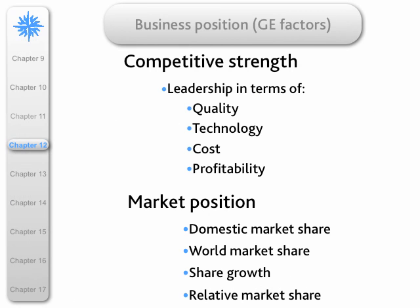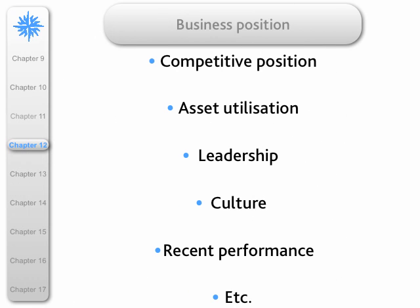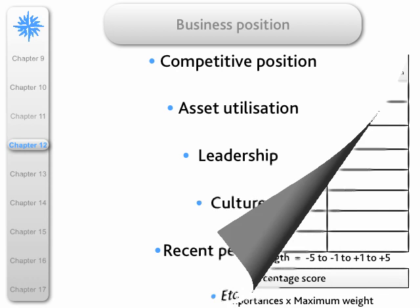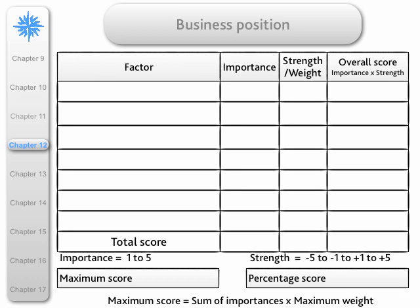Leading the challenge to BCG were companies such as GE and Shell. They said that business position — in the case of GE — could be measured by the competitive strength of the firm and its market position. For any business, we can work out its business position by using indices such as its competitive position, asset utilization, etc. We can list these as factors, attach to each an importance and a strength, and get an overall score.